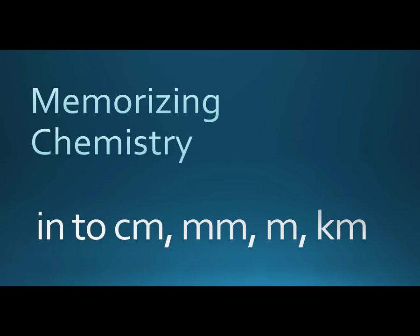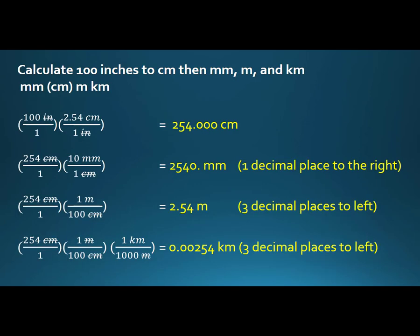Millimeters, meters, and kilometers all have a relationship that moves a decimal three places one way or the other, but the centimeter is a little bit of an oddball, and we want to make sure that we understand what the confusion comes from.